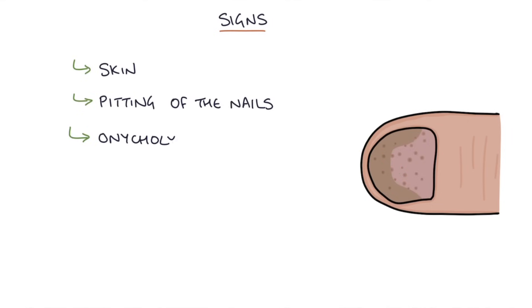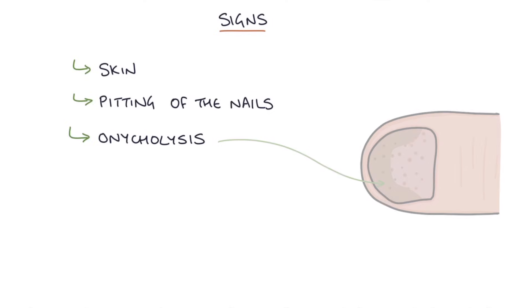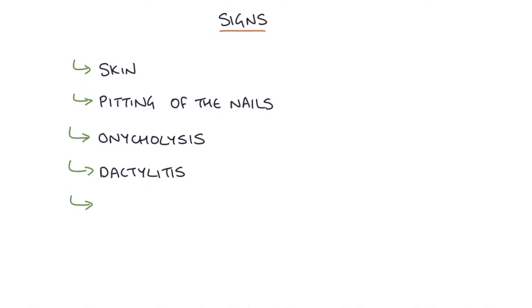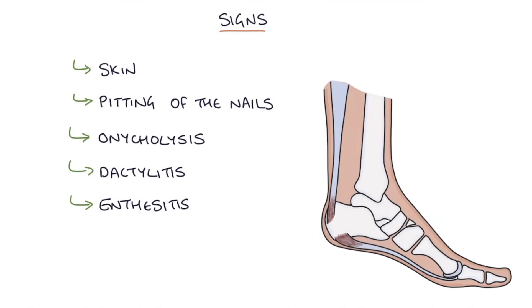Another sign is onycholysis, which is a separation of the nail from the nail bed. Dactylitis is a classical sign of psoriatic arthritis — it's where you have inflammation of the full finger or the full toe. An associated sign is enthesitis, which is inflammation of the entheses — the points at which tendons insert into bones — so that junction between tendon and bone becomes inflamed and sore.